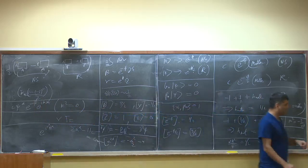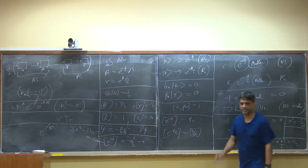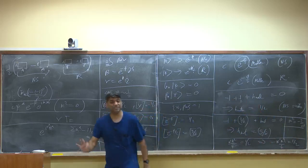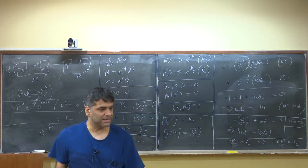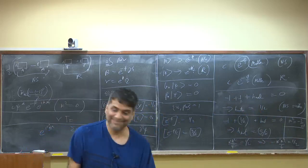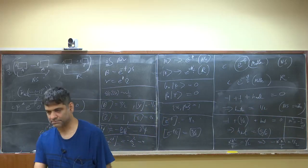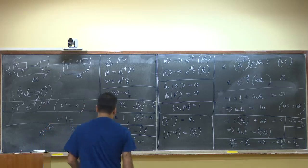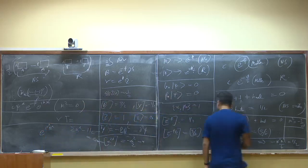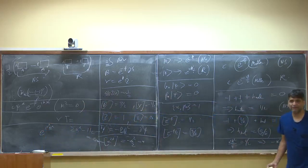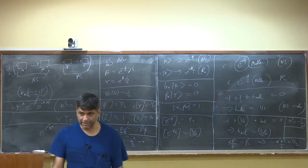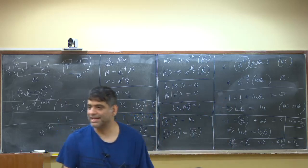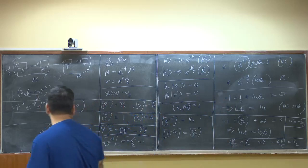Now we've had our first brush with vertex operators in the superstring. We want to understand this story more systematically. Exactly as in the bosonic string, the systematic way is through the BRST charge. I'm going to write down the BRST current and then do a little analysis with it.